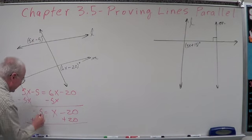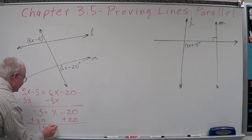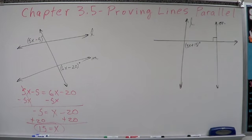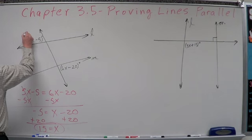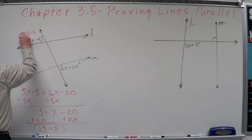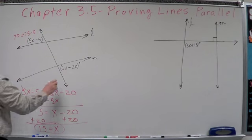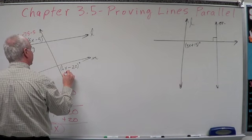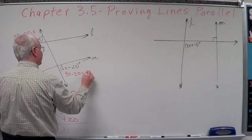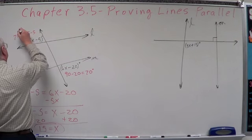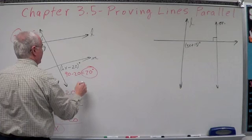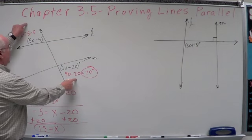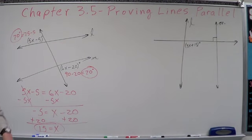We're going to end up with 15 equals X. So if we plug 15 back in here, we should get: 5 times 15 is 75 minus 5, and that equals 70. 6 times 15 is 90 minus 20, and that equals 70. We've got the same angle. If X is 15, then that would make these two angles congruent, therefore these two lines would be parallel.